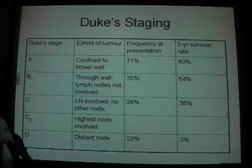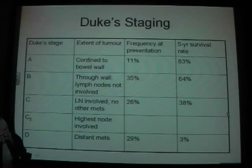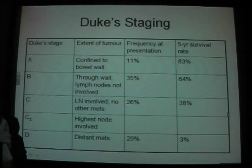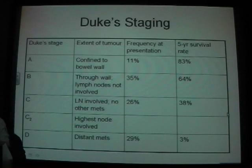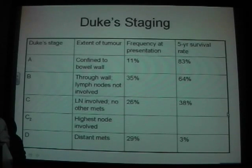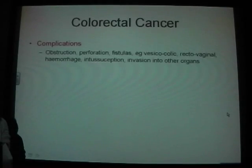Duke stage A is confined to the bowel wall with the best survival rate of 83%. Stage B is when it goes through the wall but lymph nodes are not involved. Stage C is when lymph nodes are involved but there are no distant metastases. Stage C1 has fewer nodes involved. Stage D has distant metastases and carries a very low survival rate.